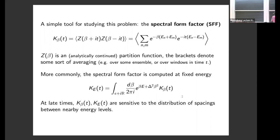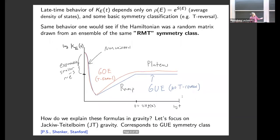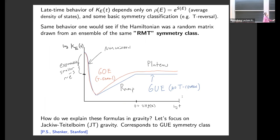Another reason we study the spectral form factor is that at late times it has universal behavior depending only on the density of states and a classification of the system into a small set of symmetry classes, where the symmetries are discrete anti-unitary symmetries. The example we'll keep in mind for this talk is just time reversal.